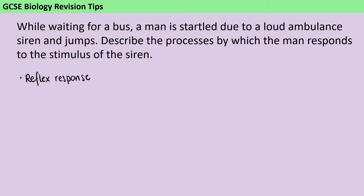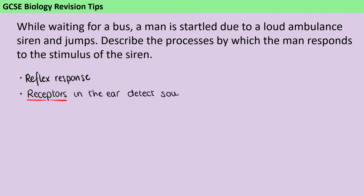The first key thing that happens is that we have cells that can detect a stimulus, and the proper terminology for that is receptors. So there are some receptors in the ear, and they detect the sound — that is the stimulus. Even though the question talks about the stimulus of the siren, it's good to make it clear that I know what that means.